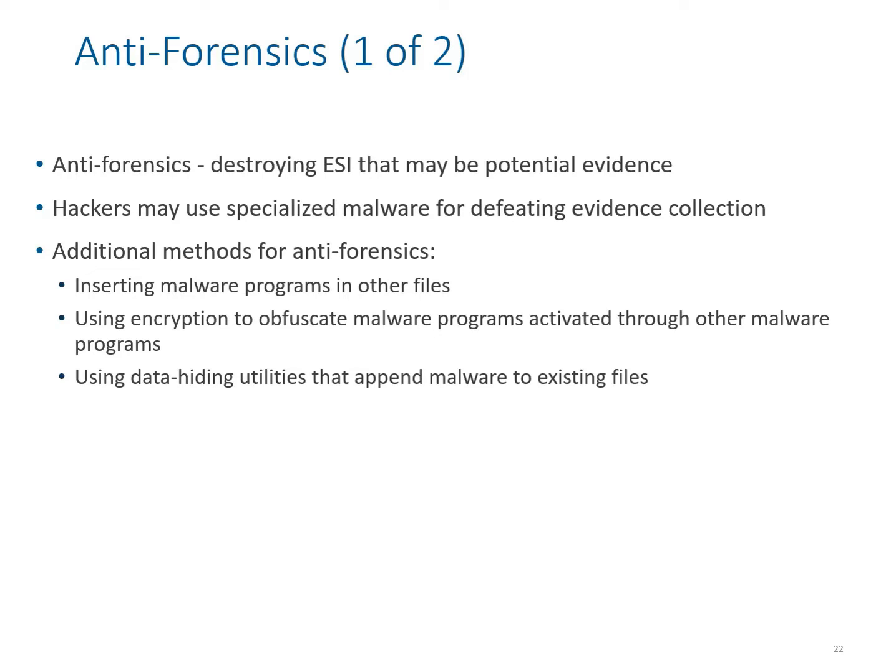When using specialized software to read encrypted or modified data, there are still chances that data could be modified. Additional anti-forensics methods include inserting malware into other files, using encryption to obfuscate malware, activating through other malware programs, or using data-hiding techniques that append malware to existing data. Other techniques affect metadata by changing and modifying last access date-times — changing timestamps makes it difficult to develop a timeline of hacker activity.